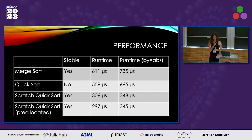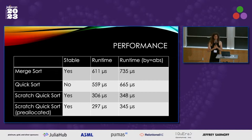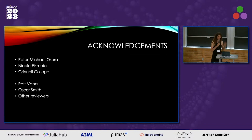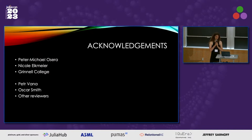Allocating unnecessarily — huge red flag, don't do it, bad performance. Allocating necessarily can actually be fine performance, I think, although there are some domains that really don't want allocation. Limitations: it allocates, not always faster. I'd like to thank Peter, Michael, Sarah, and Nicole Eichenmire for funding, and lots of folks helped review this. Thank you. Questions?